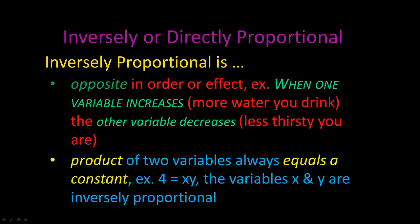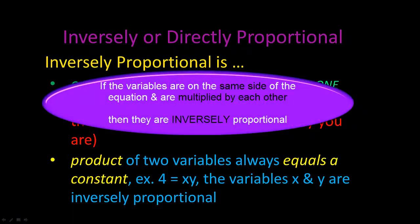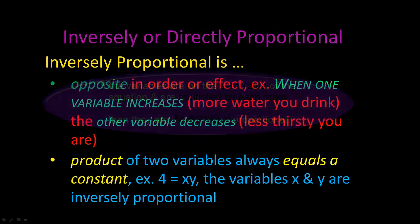The product of two variables always equals a constant. In this example, when you multiply the variables x and y, it always equals four. So the variables x and y are inversely proportional.